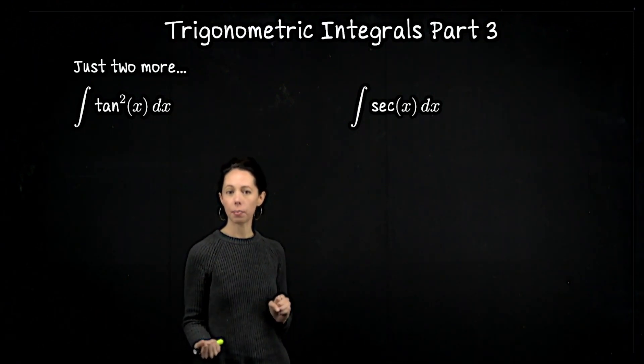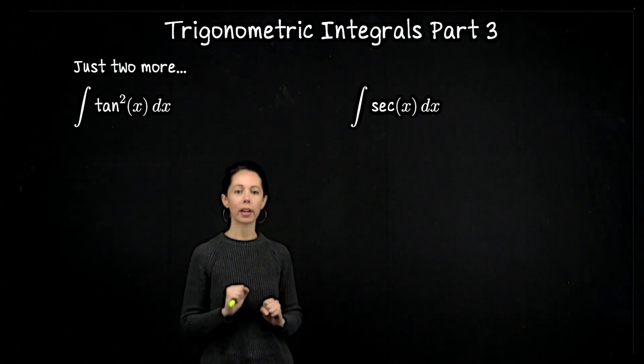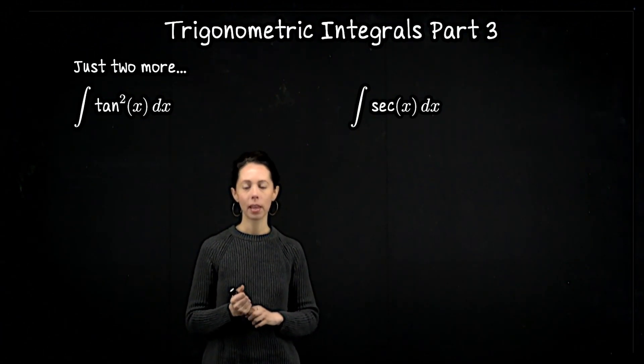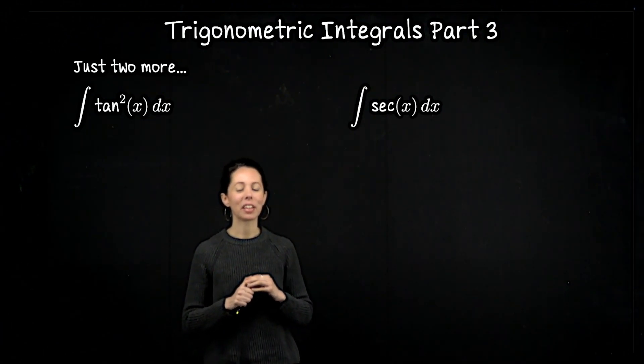I would like to integrate an even power of tangent, notably tangent squared, and an odd power of secant, which is just going to be secant itself. Each of these is a neat little integral to do.